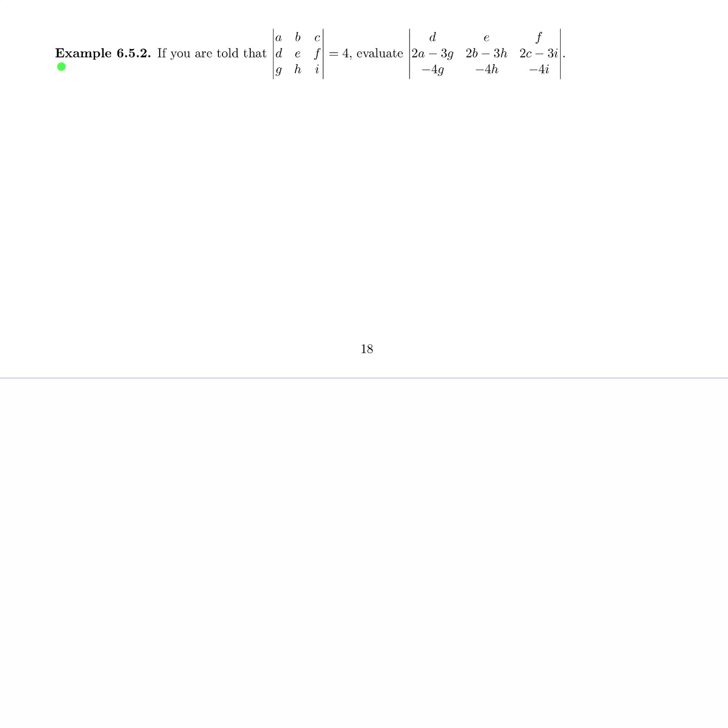Welcome back. In this video, we're going to do example 6.5.2. We're told that the determinant of ABCDEFGHI is 4, and we're asked to evaluate this monster determinant.